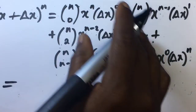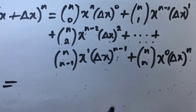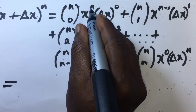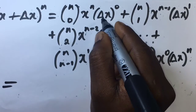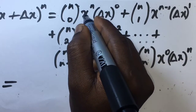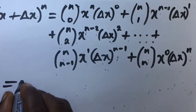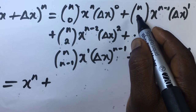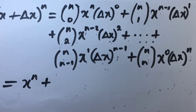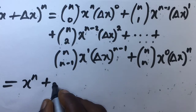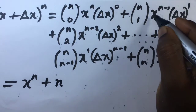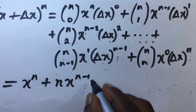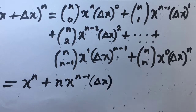Simplifying: nC0 equals 1, and (Δx)^0 equals 1, so the first term is x^n. For the second term, nC1 equals n, giving n·x^(n−1)·Δx. For the third term, nC2 equals n(n−1)/2, giving [n(n−1)/2]·x^(n−2)·(Δx)^2.